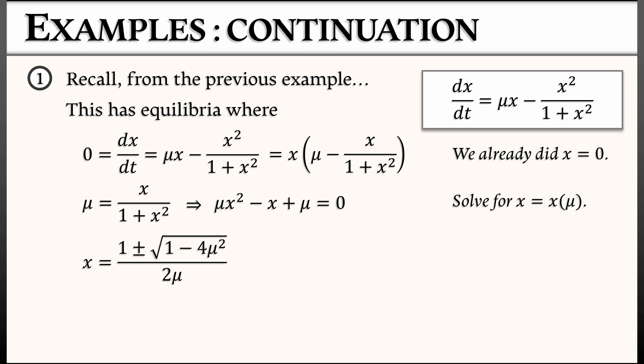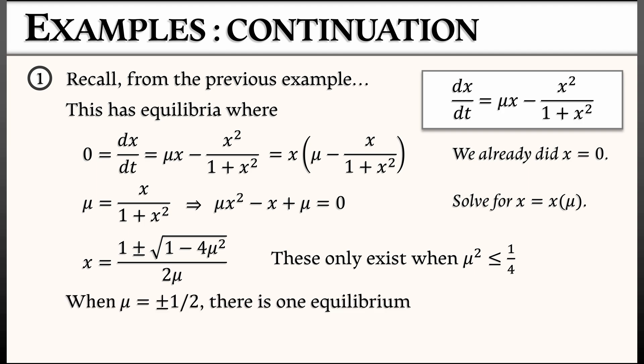These values of x have to be real — our state space is the reals. So we only have solutions to this quadratic when mu-squared is less than or equal to 1/4. That means when the absolute value of mu is less than 1/2, we have an additional 2 equilibria. But when mu equals precisely plus or minus 1/2, we have just one additional equilibrium.